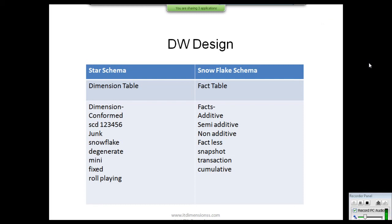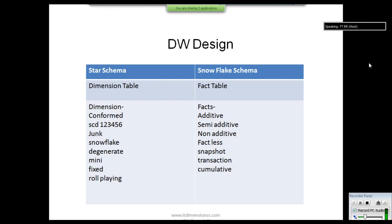An additive fact table — consider this example: each day in your company you have a sale of ten dollars. The total sale for last week can be calculated by adding the individual daily sales, giving seventy dollars. Because we add all individual sales each day, this kind of table is known as an additive fact table.